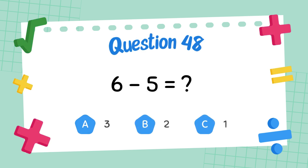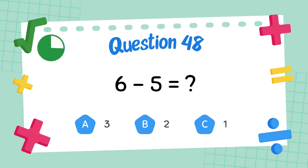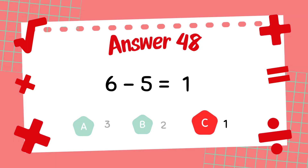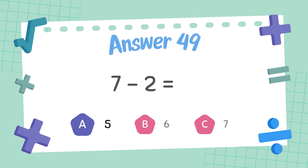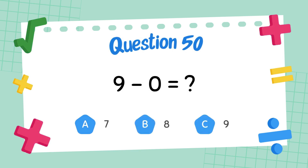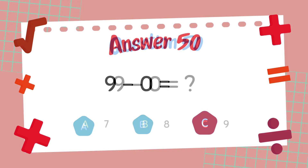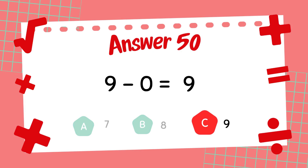What is 6 minus 5? The answer is 1. What is 7 minus 2? The answer is 2. What is 9 minus 0? The answer is 9.